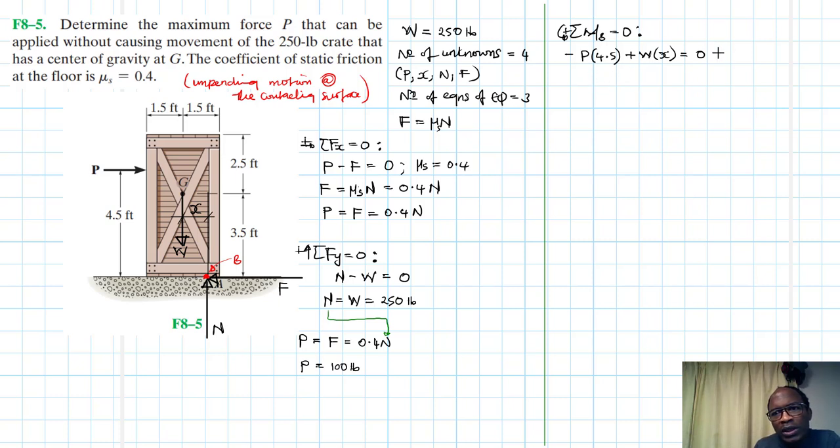So here we already have what P is. We want to check the value of X. And we also have W which is equal to 250 pounds. Our X here would be equal to 4.5 P divided by W. And our X therefore would be equal to 4.5 by 100 divided by 250. So this gives us 1.8 feet.